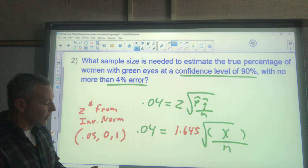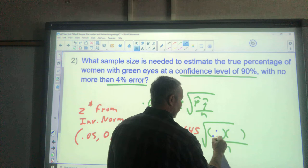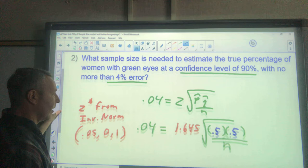So the conservative estimate, if they don't give it, we use 0.5. If they don't tell you that, then you must plug in 0.5 there, and that's what we're going to use to evaluate this.